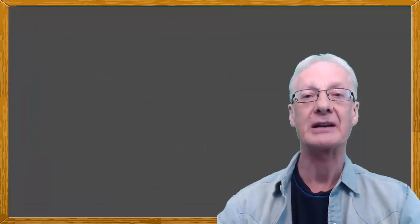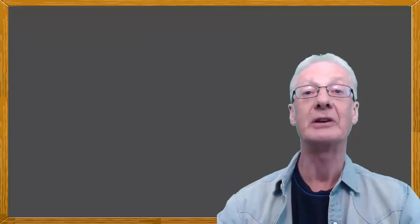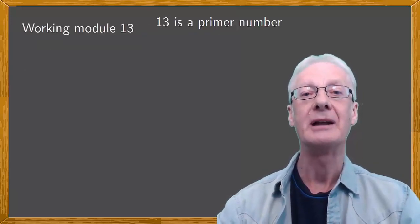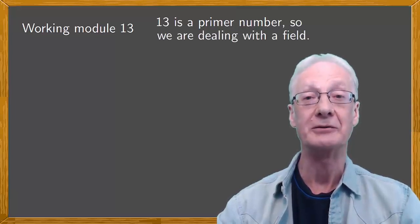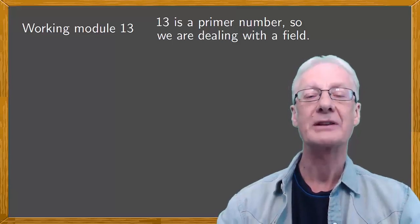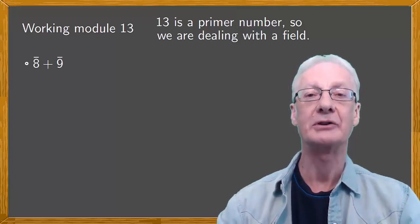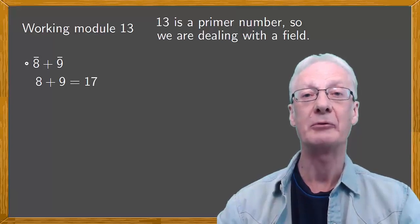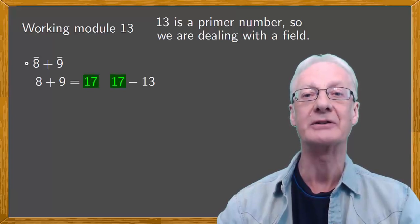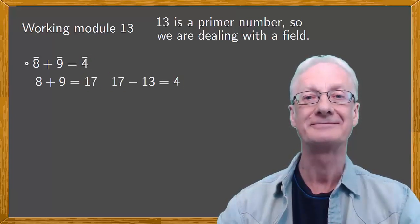Let's end with another example, this time involving modulo 13. Because 13 is a prime number, every non-zero element will have an inverse, so we are dealing with a field. First, let's do the sum 8 plus 9 modulo 13. 8 plus 9 is 17. Then we reduce modulo 13, which means subtracting 13, to give the final result 4.